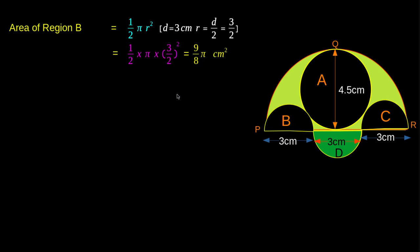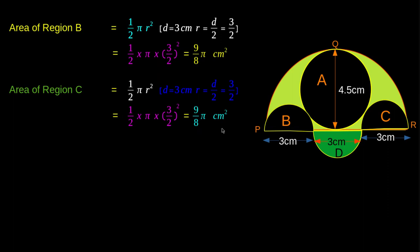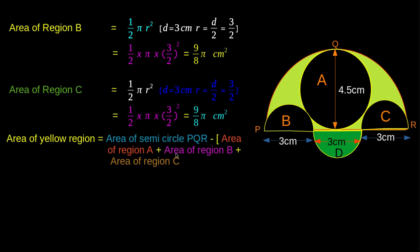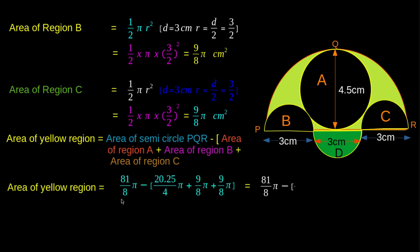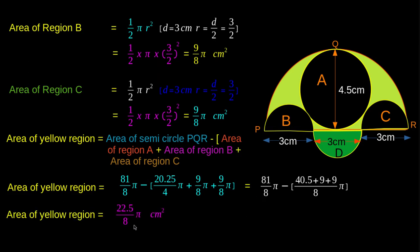Area of region C is equal to (1/2) π R². Here also, D is equal to 3 cm, so the area is 9/8 π cm². The area of the yellow region is equal to the area of semicircle PQR minus half of (area of region A plus area of region B plus area of region C). Therefore, area of yellow region = 81/8 π − (1/2)(20.25/4 π + 9/8 π + 9/8 π) = 22.5/8 π cm².